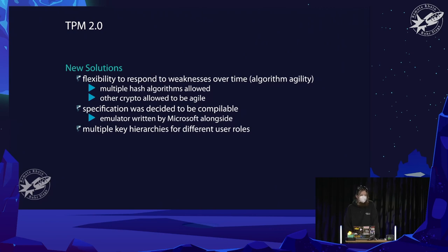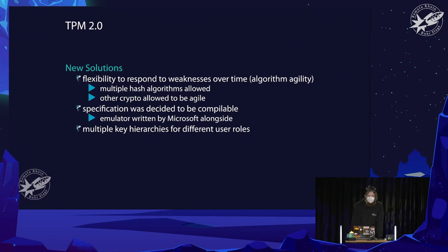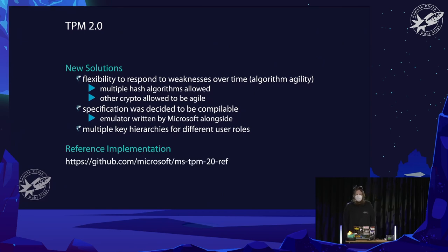The next big step was TPM 2.0. One key improvement was algorithm flexibility — you can now use different hash algorithms and different algorithms for computations. Previously there was just RSA; now you could use others. Another key idea was a compilable specification — Microsoft wrote an emulator simultaneously as a reference implementation for resolving ambiguities. There were now multiple key hierarchies, giving the TPM more and more purposes.